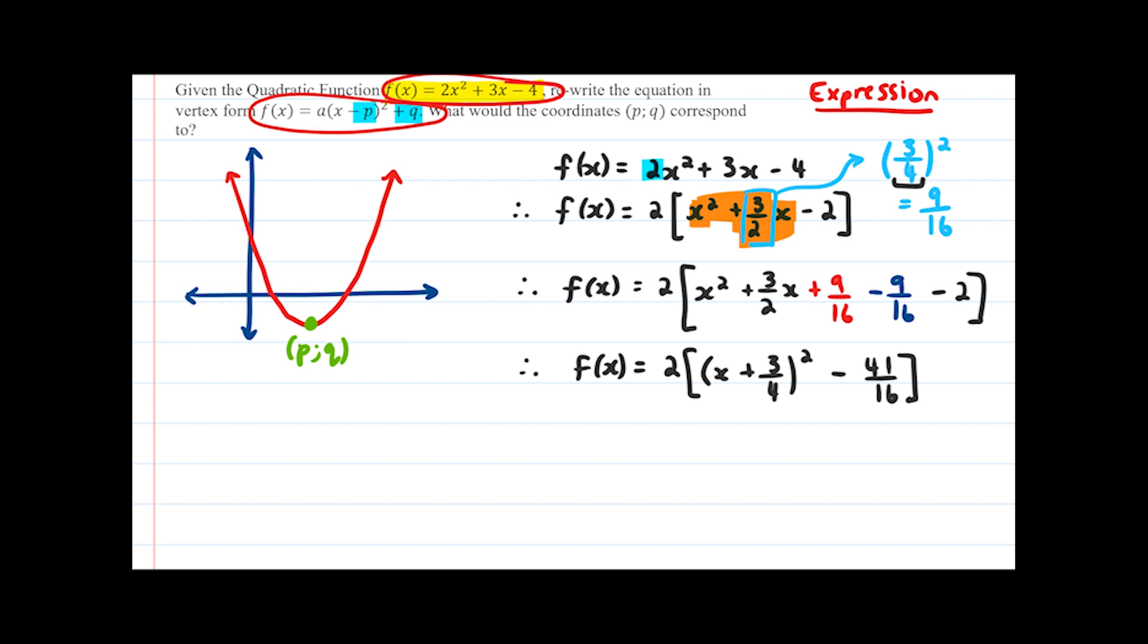We're almost finished because you should be able to see now that this very closely resembles this form over here. So our final step is simply to multiply the 2 back into the bracket and we get f(x) = 2(x + 3/4)² - 41/8. And hopefully you can see that's our p value and that is our q value.